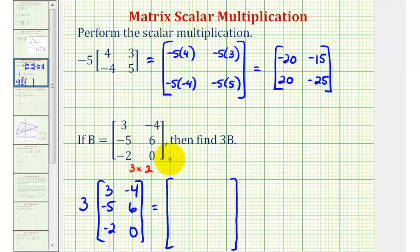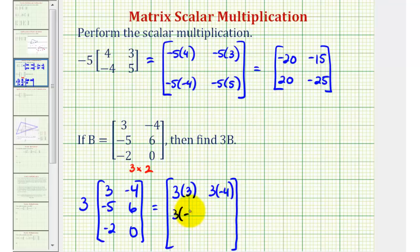For the first row, we would have three times three, and then three times negative four. For the second row, we'd have three times negative five, and three times six. And for the third row, we'd have three times negative two, and three times zero.